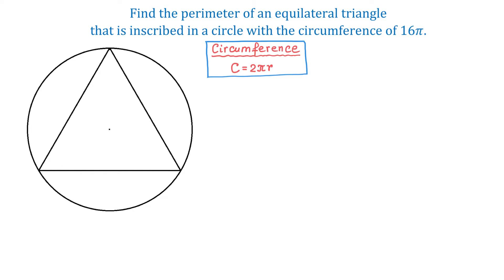The formula for the circumference of a circle is C equals 2 pi r, where r represents the radius. If in this formula we replace C with 16 pi, then we can solve it and find the radius. So if we replace C with 16 pi, we will have 16 pi equals 2 pi r.